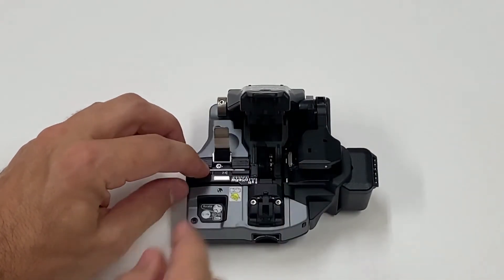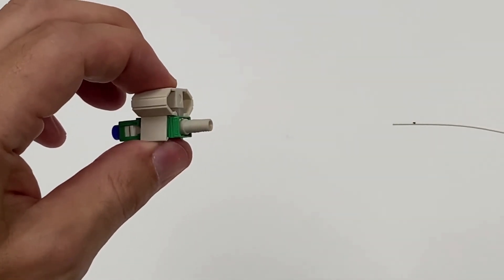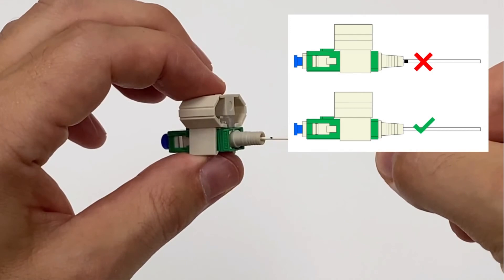Take the fast SCA connector and squeeze the top and bottom of the wedge to ensure it is engaged. Insert the fiber into the connector. Make sure the marking disappears inside the connector before releasing the wedge.